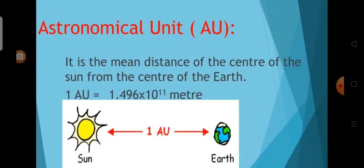Now we will see about the astronomical unit. Astronomical unit is the mean distance of the centre of the sun from the centre of the earth. One astronomical unit is equal to 1.496 × 10¹¹ metres.